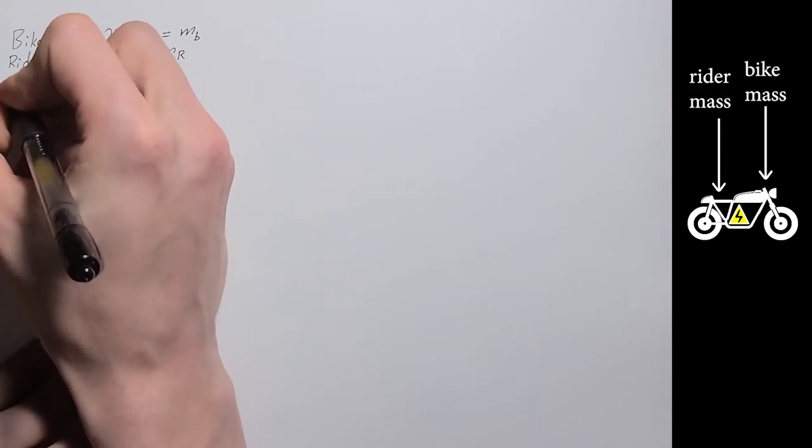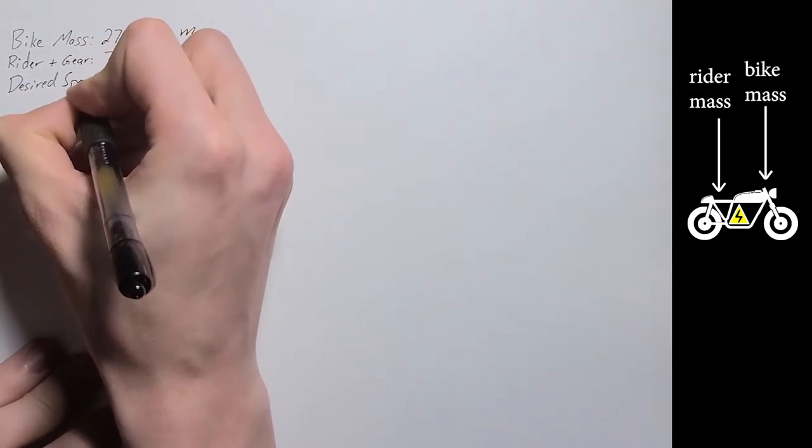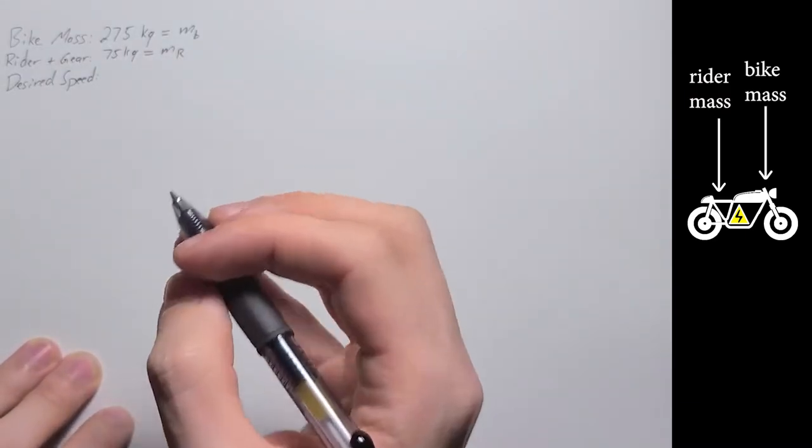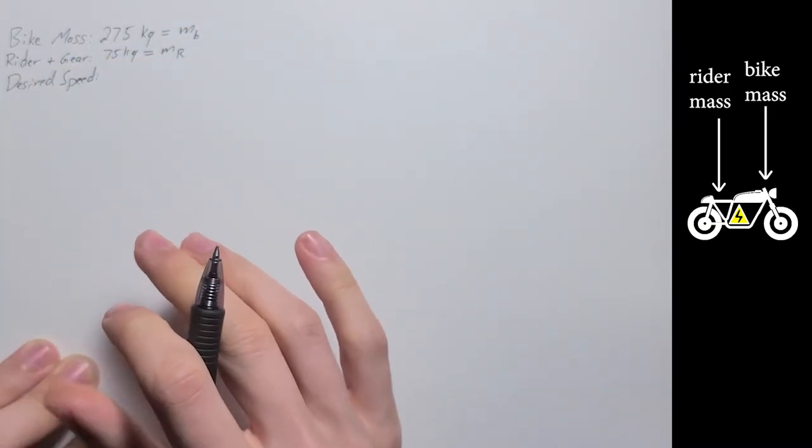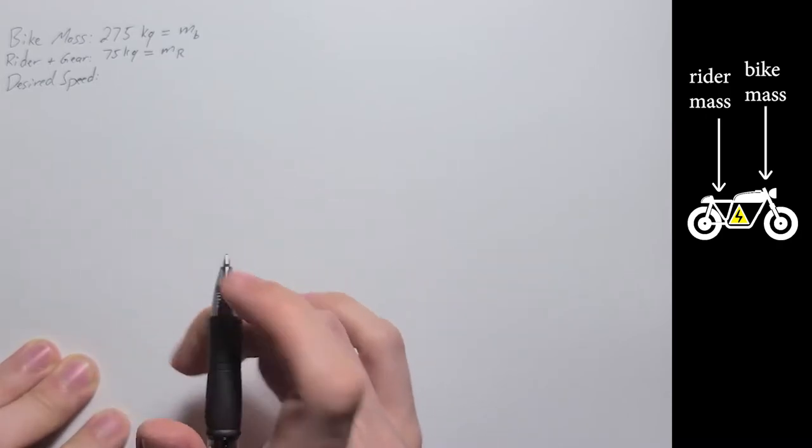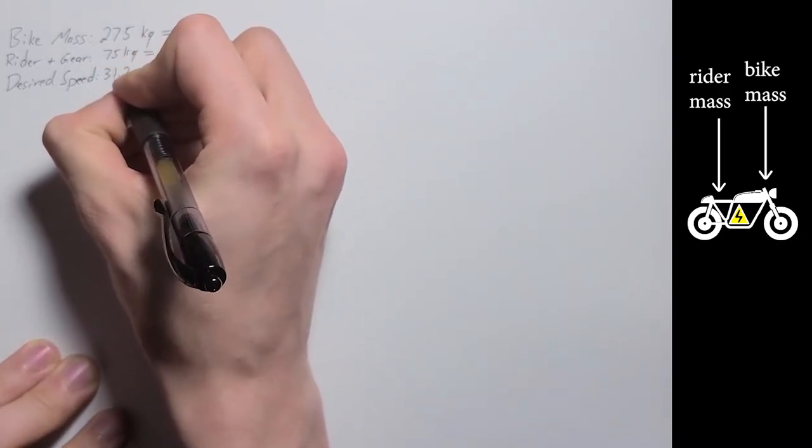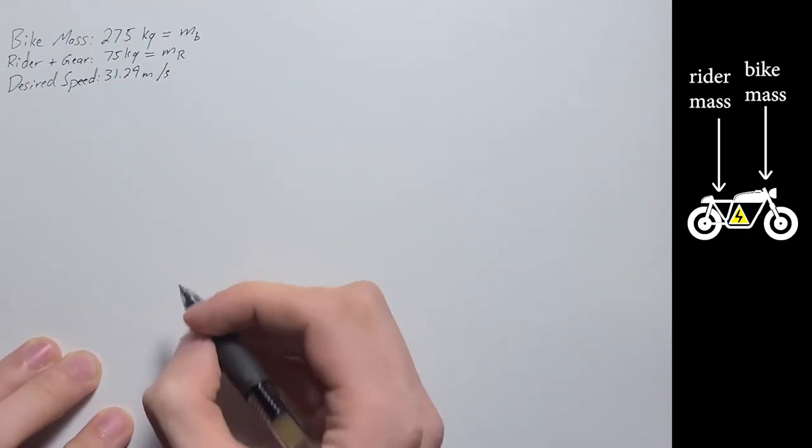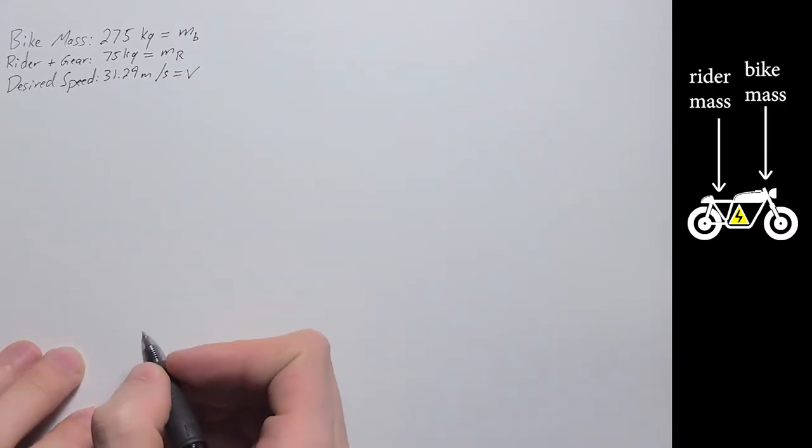Next up is my desired speed that I'd like to be able to go. So I'm going to be doing the top end speed. For this, I'm looking for about 70 miles an hour, which is 110, 112 kilometers per hour, which when you convert comes down to 31.29 meters per second. So that's going to be our velocity.